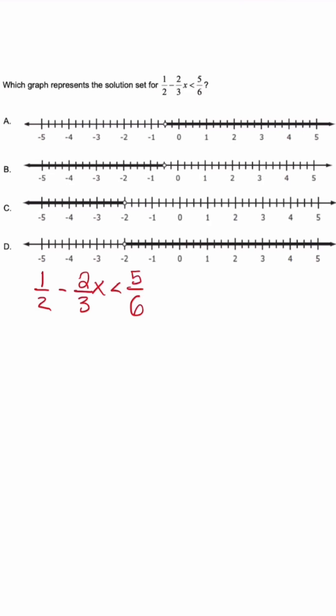When we have an inequality with fractions and we're solving it keeping the fractions, the first thing we want to do is subtract one half. So we have negative 2 over 3x is less than 5 over 6 minus 3 over 6 once we come up with an equivalent fraction. This side is going to simplify to 2 over 6.